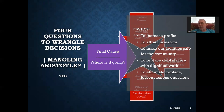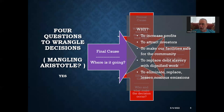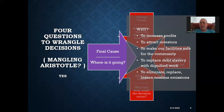To increase profits. To attract investors. Replace debt slavery with dignified work. There are companies actually engaged in that activity in the rare earth — the very thing powering computing and satellites and this machine we're talking into. Rare earth has much involved child slavery. Well, replace that. Médecins Sans Frontières — Doctors Without Borders — very specifically, it's not about increasing profits. When they call themselves a public benefit corporation, they mean they're providing something for the common good. Eliminate, replace, lessen noxious emissions — you can come up with lots of whys, and you can actually create a hierarchy of those whys.